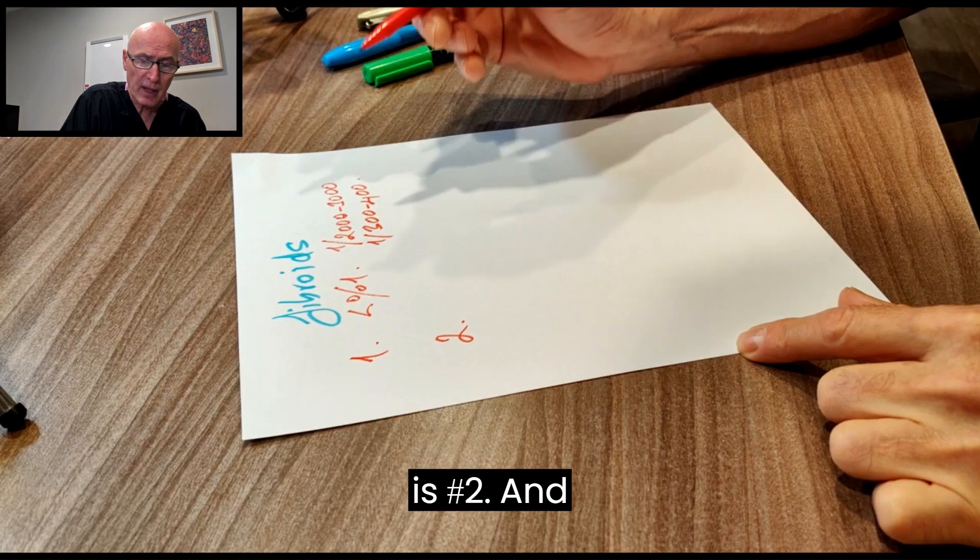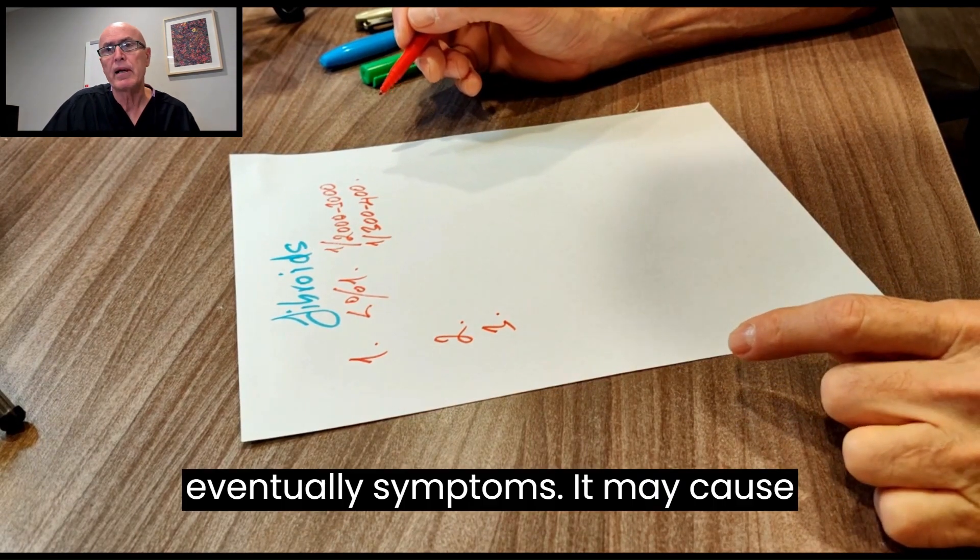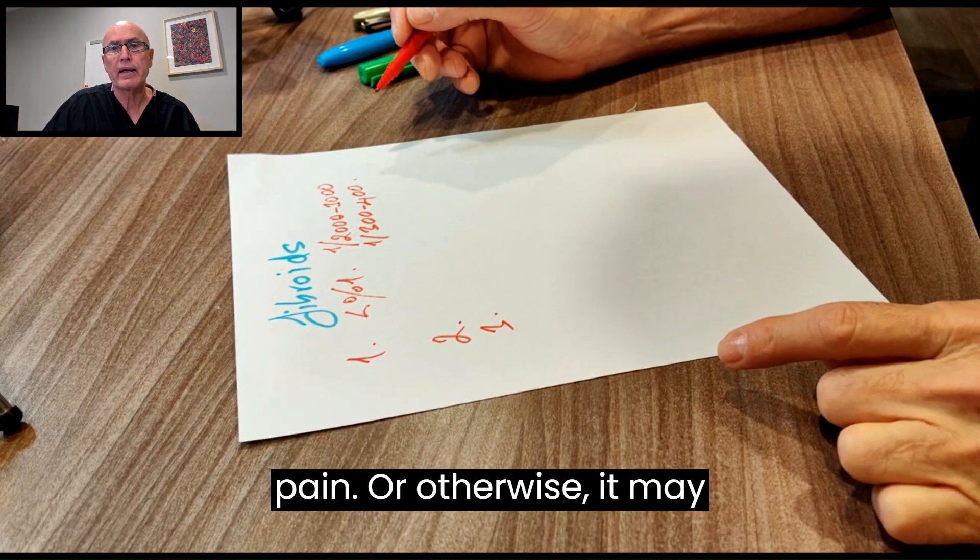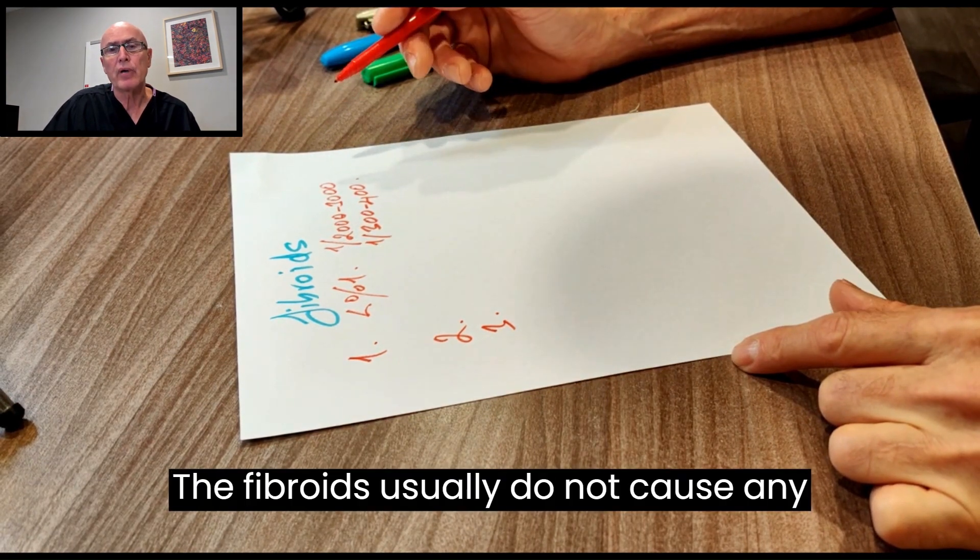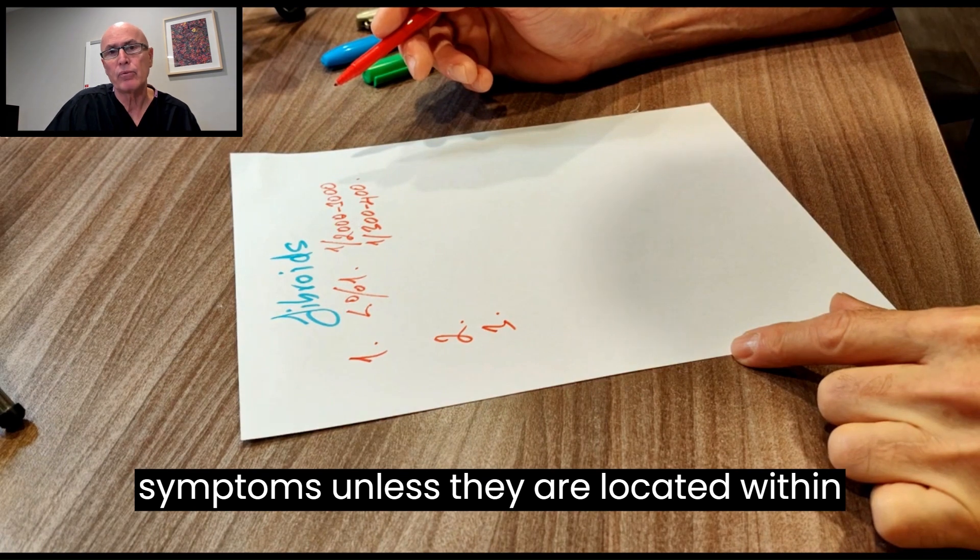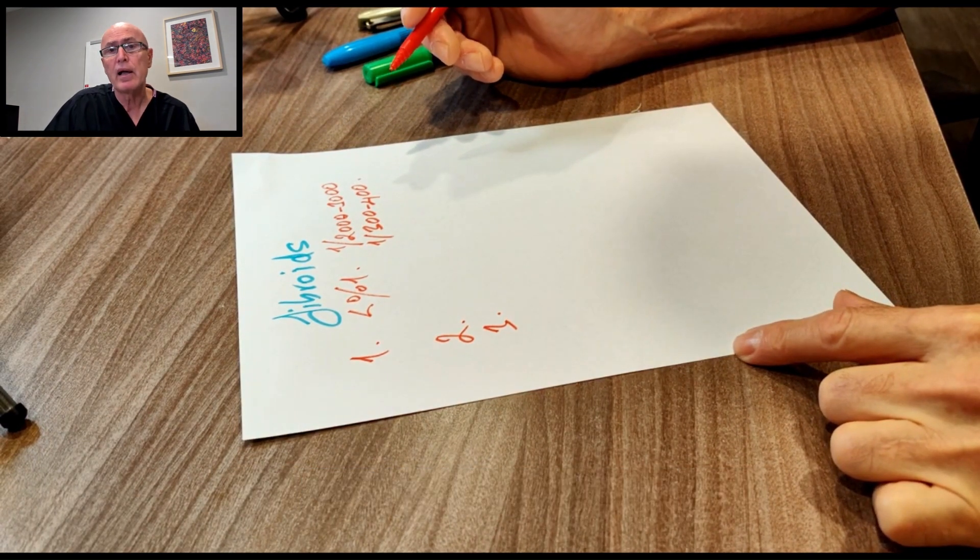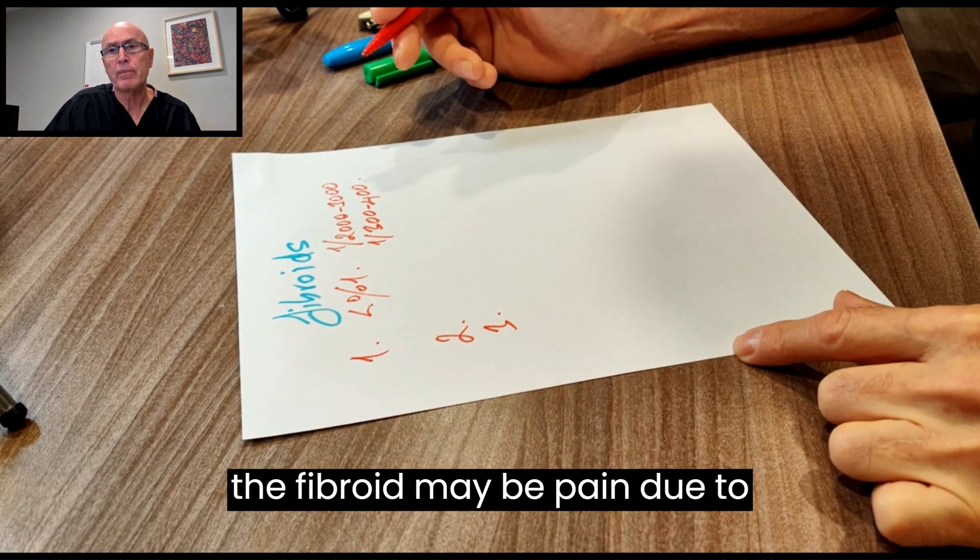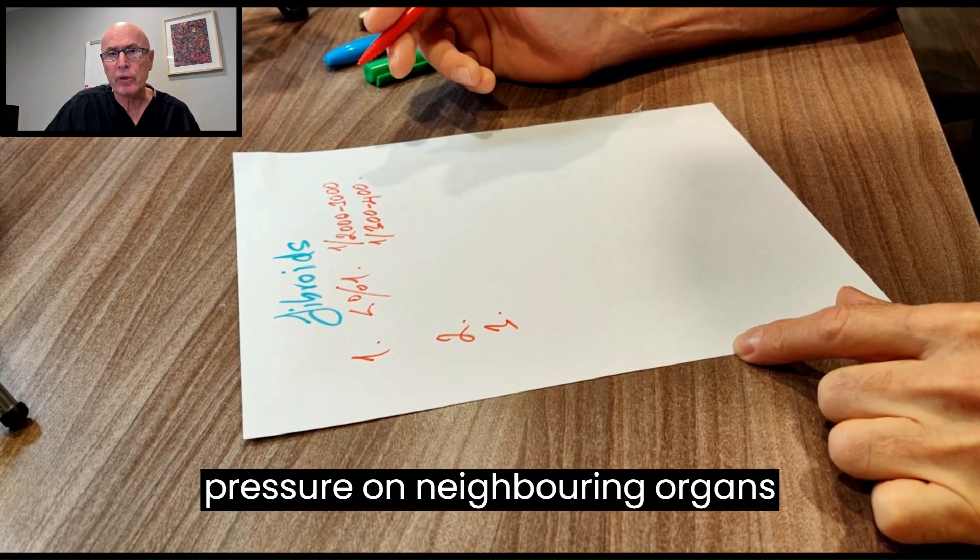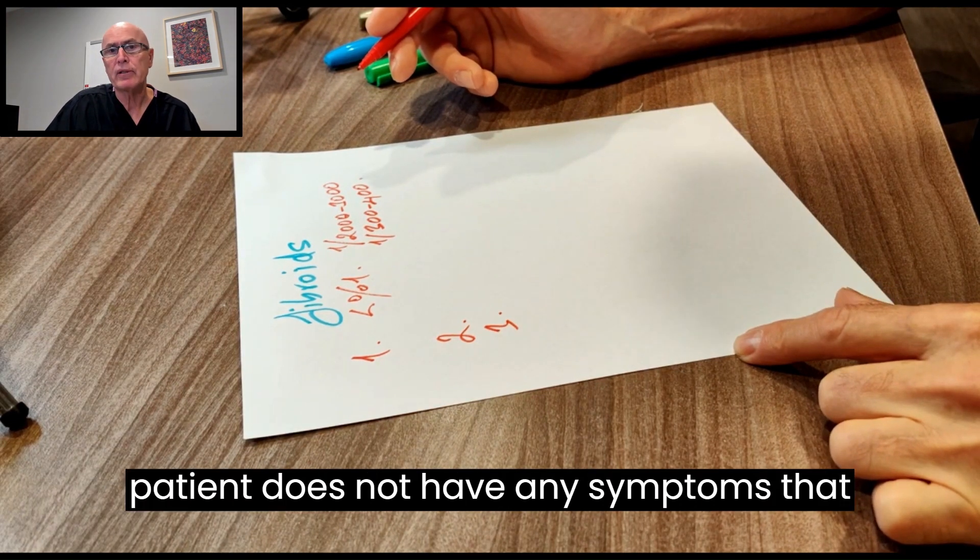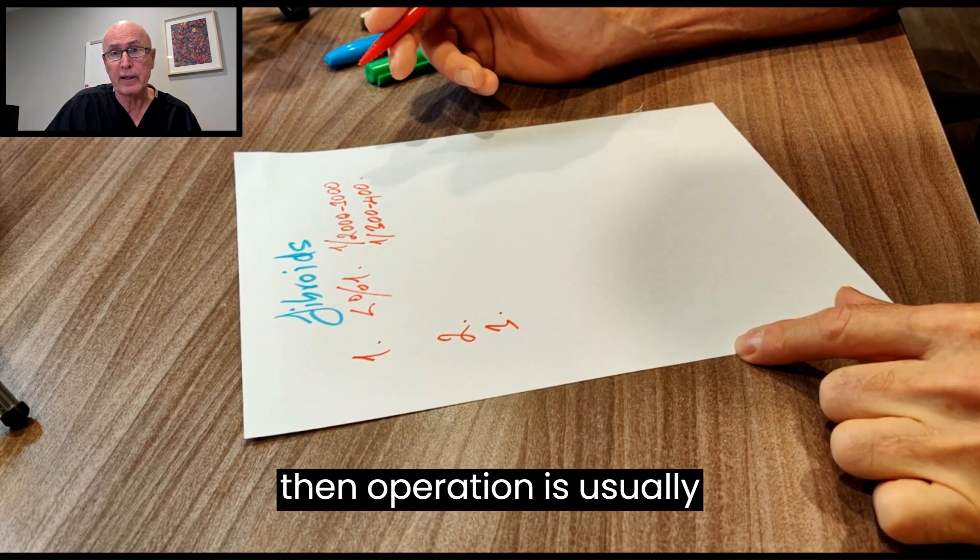Number three: if you have a fibroid, it may eventually cause symptoms or necessitate surgery. So why not remove it when we see it? Fibroids usually do not cause any symptoms unless they are located within the uterine cavity, which may cause bleeding. Otherwise, fibroids are usually symptomless. The most common symptoms may be pain due to degeneration, bleeding, pressure on neighboring organs, or infertility. If the patient does not have any of these symptoms, then operation is usually not indicated.